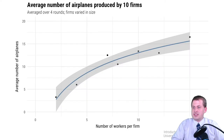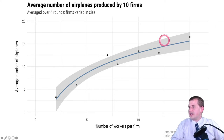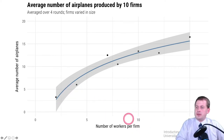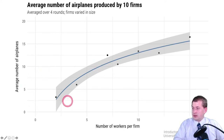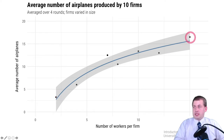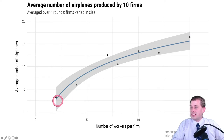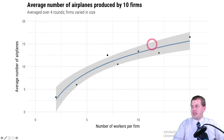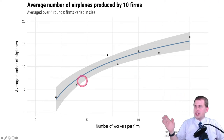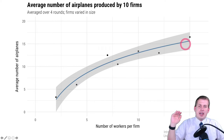This happens everywhere people do this simulation. Data from a university in Colombia in an intro microeconomics class in 2008 shows the same pattern: as you increase the number of workers in these small firms, you get more airplanes — up to about 16 or 17 with 15 people — but it's not a direct line. It curves down.